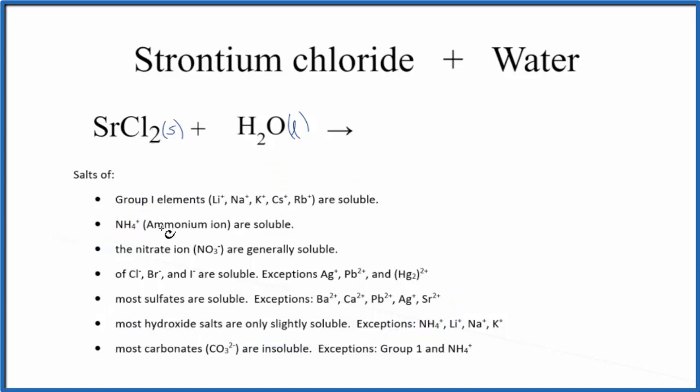So as we go down we're looking for something with strontium or chlorine. Here's the chloride ion. When we have something with the chloride ion, the Cl here, it's going to be soluble with a few exceptions. So since that's soluble, when this dissolves it'll break apart into its ions.